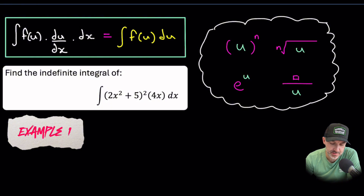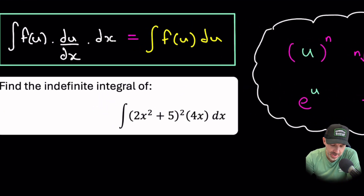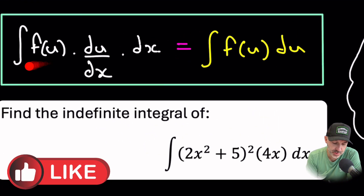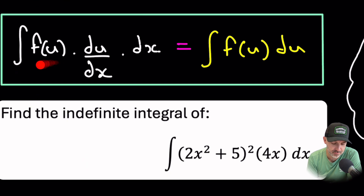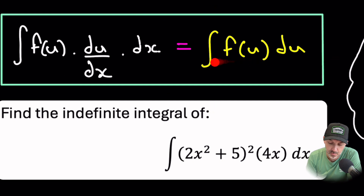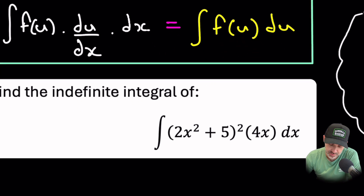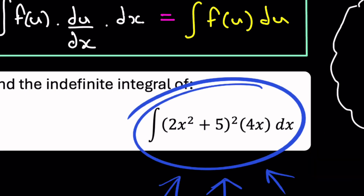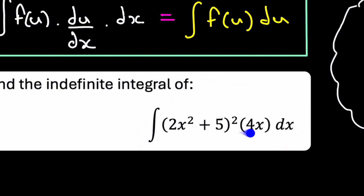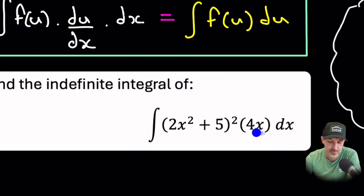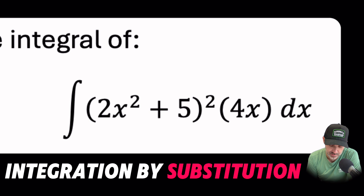The best way to start is to work through an example and unpack the expression as we go. We're looking for an integral where there is a function of U and the derivative of U is also in that function — then we can rewrite it as an integral of f(U) with respect to U. We have the integral of (2x² + 5)² times 4x dx. We don't have a rule for the integral of a product in integration, so we're going to use substitution.